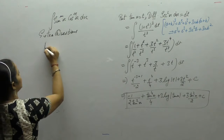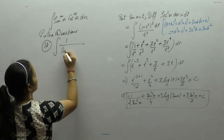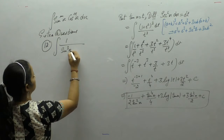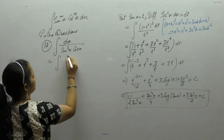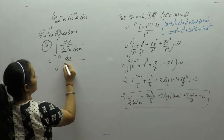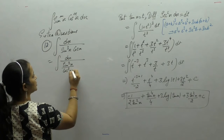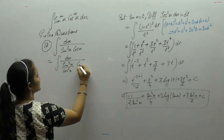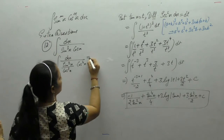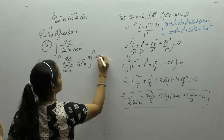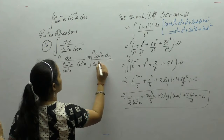Integral of 1 upon sin cube x cos x. Here we divide it by cos cube x. Cos cube x into cos x is cos 4. We can write 1 upon cos 4 as sec 4x dx upon tan cube x.